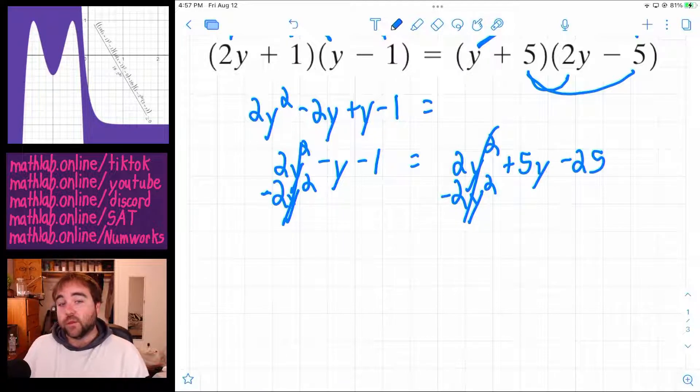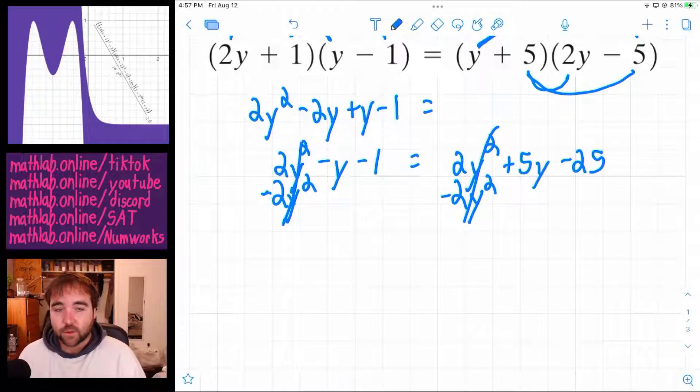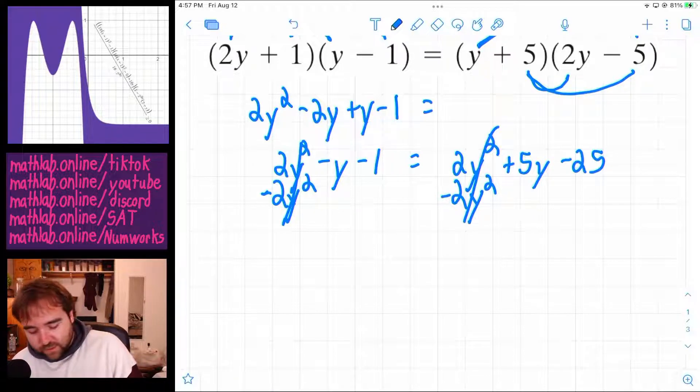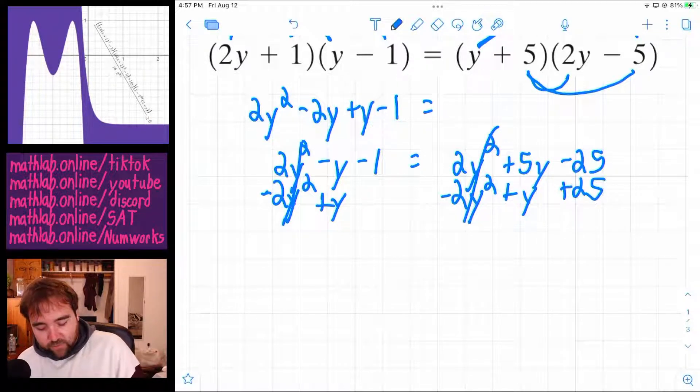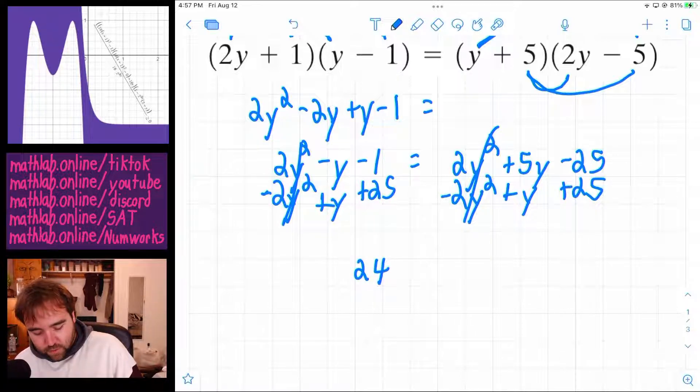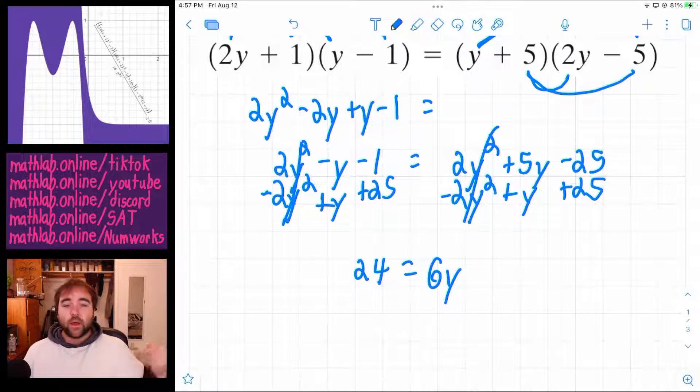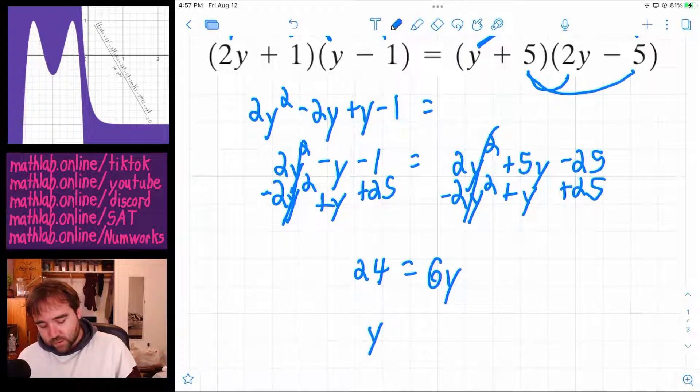And so now we don't have to deal with any of the squared things. We just have to deal with the linear things. We just have to get the y's together. So to do that, let's add y to both sides. And then let's add 25 to both sides. So we get 24 equals 6y. And then divide both sides by 6. So y equals 4.